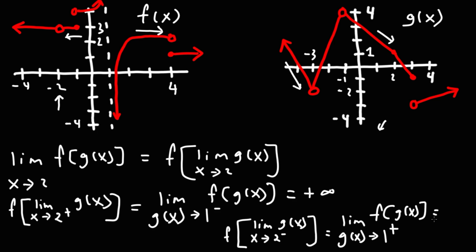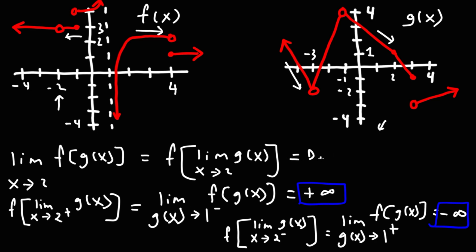As we plug this into f, with g of x approaching 1 from the right, we have f of 1 from the right side. As we follow this to an x value of 1, the curve is going towards negative infinity. Because the right-sided limit gives positive infinity and the left-sided limit gives negative infinity, the original limit does not exist.